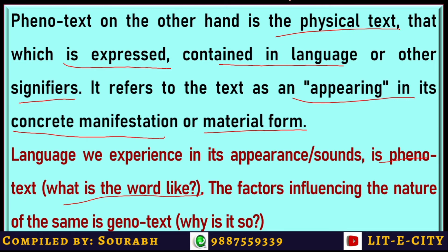Genotext is the unseen control of society over the Phenotext. Why would a particular word — once considered a taboo word, once considered a vulgar word — later acquire social currency and become part of normal language? It resides in the Genotext, while the appearing of that particular word again and again in text becomes a part of Phenotext.